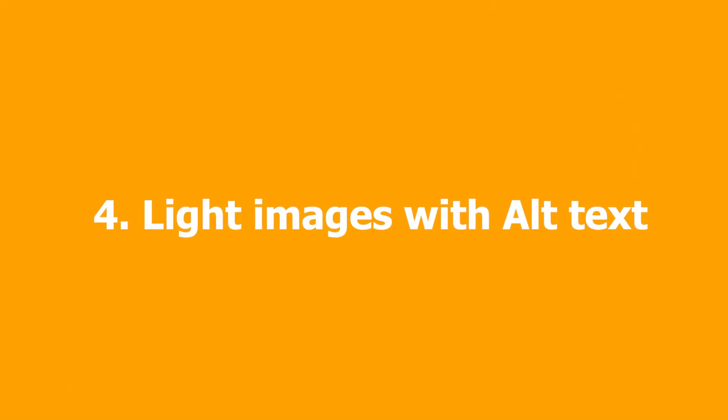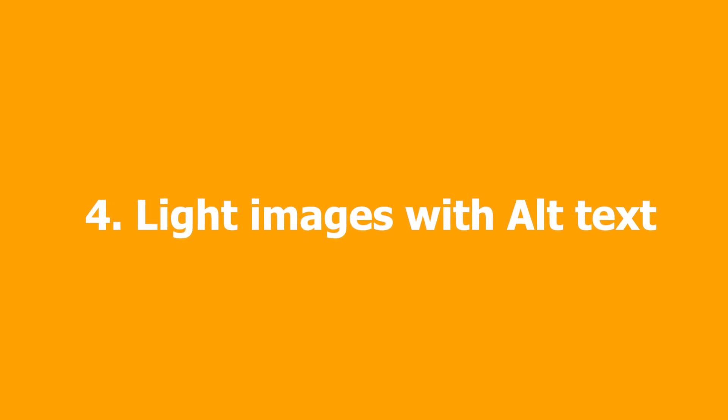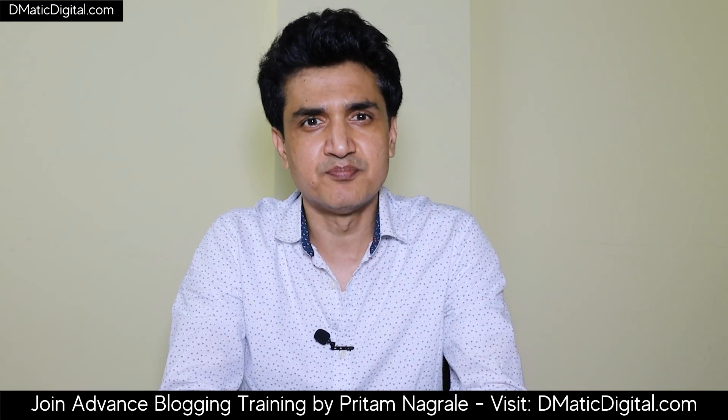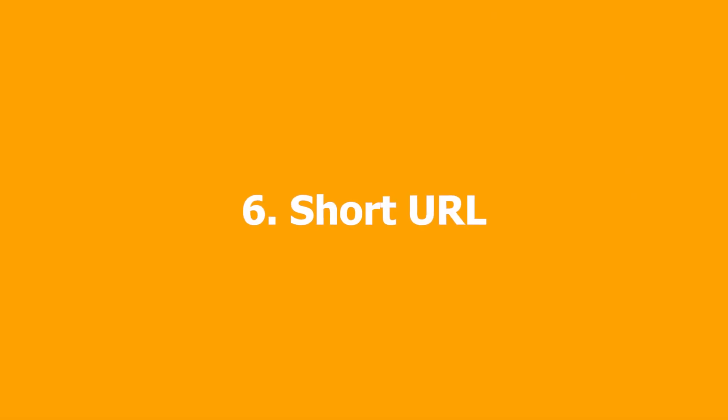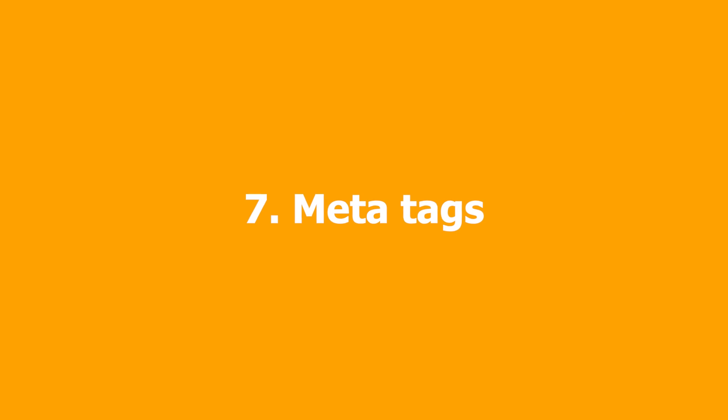Third is post structure and headings — your post should have a proper structure using H1 for the title and H2, H3, or H4 for subheadings. Fourth is images with alt text — use good images with alt tags that help search engines understand your images. Fifth is internal and external links — interlink relevant articles within your post and add links to authority websites to reduce bounce rate and encourage engagement. Sixth is short URLs — keep them short, clean, and include the main keyword. Seventh is meta tags — add your main keyword or LSI keywords in your meta title and meta description.